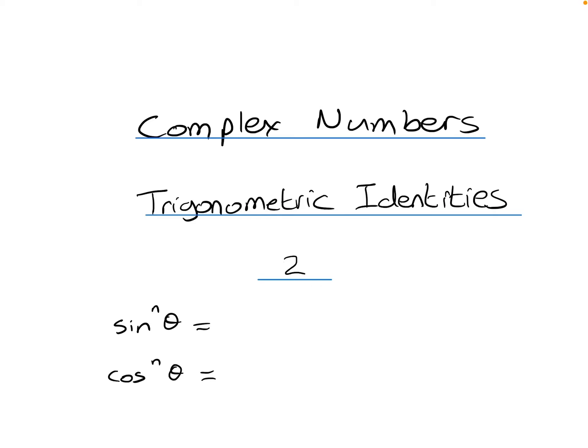This video is about using complex numbers to derive trigonometric identities in the form of either sine to the power n or cos to the power n. Obviously we know that sine squared is 1 minus cos squared, and cos squared is 1 minus sine squared. But what about sine cubed, or sine to the power 5, or sine theta to the power 9? What about those powers?